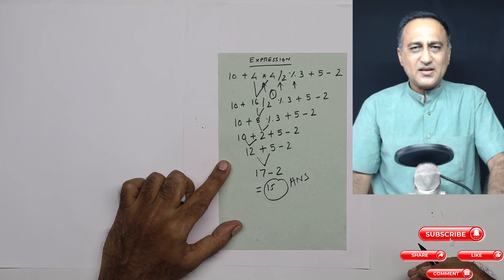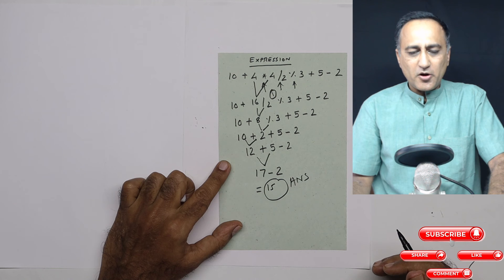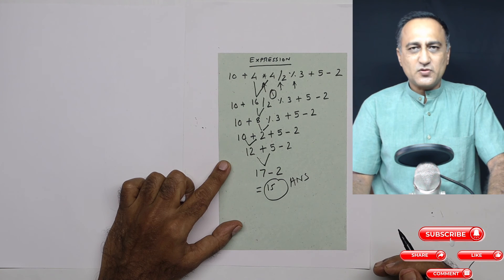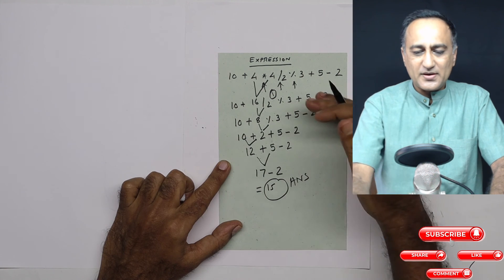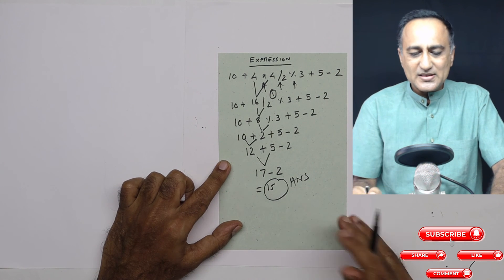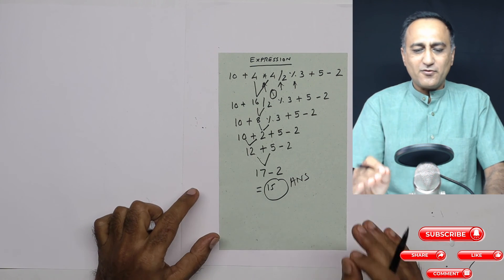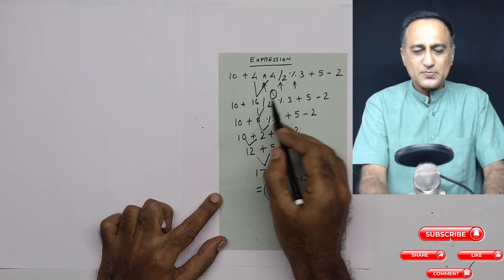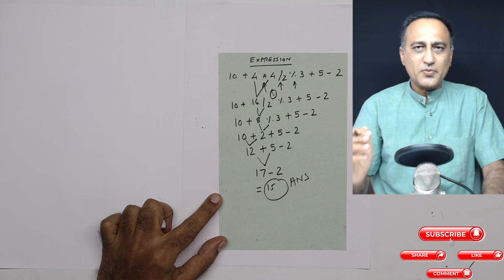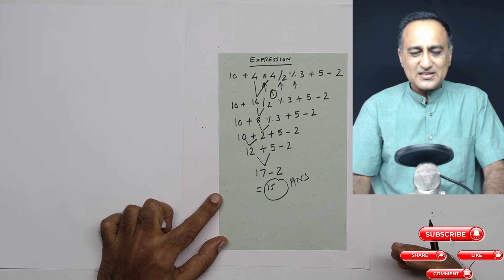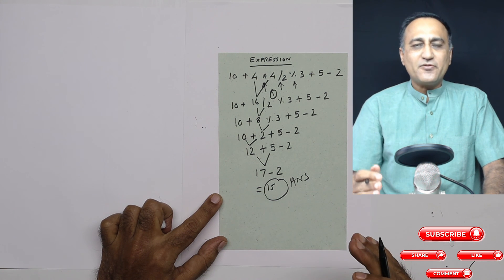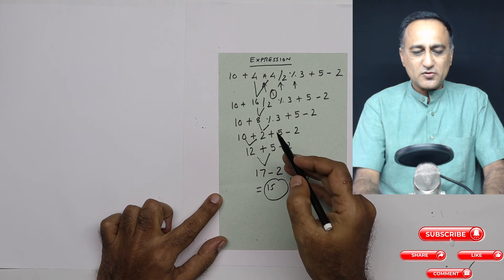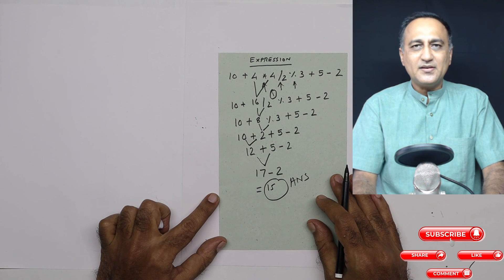So this was an expression where I showed you how using the rules of precedence and associativity you can evaluate this expression leading to a single answer. You just need to follow two concepts: one is precedence, which tells you which operator comes first, and the next is associativity, when more than one operator has equal precedence, whether to go from left to right or right to left. In case of math, it's always left to right.